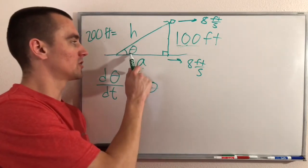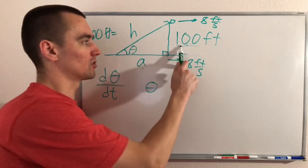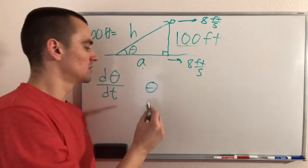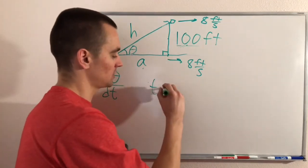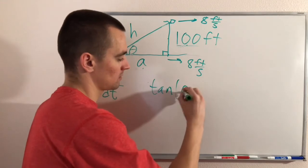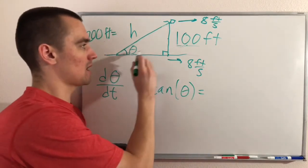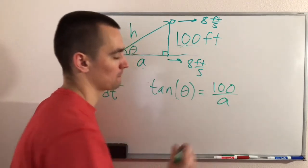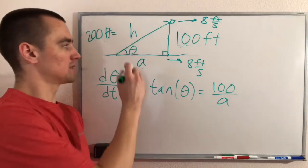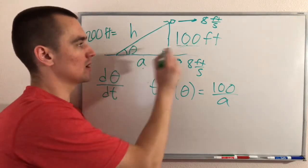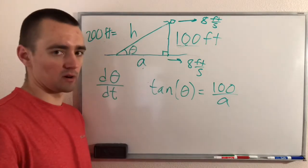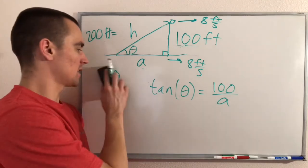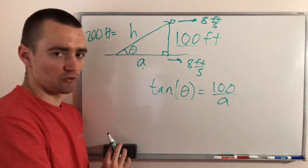Tangent — the TOA part of SOH-CAH-TOA — includes the opposite and adjacent sides but not the hypotenuse. So if we take the tangent of theta, that involves the opposite side and the adjacent side. Making our equation tan(θ) = 100/a relates the angle we need with the two sides we know the most about. This is a perfect equation to use, and that completes step two.